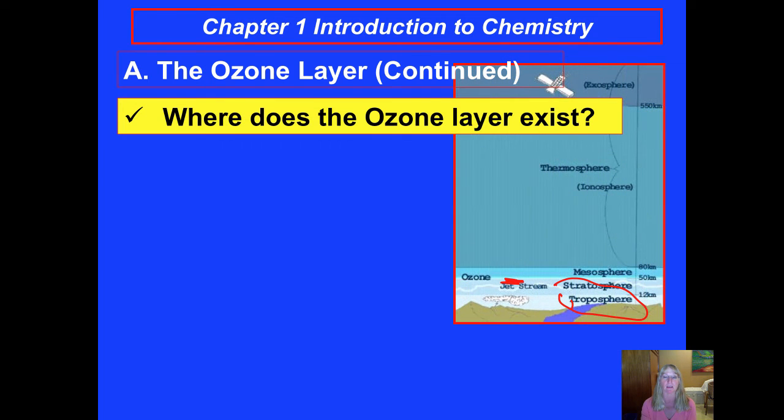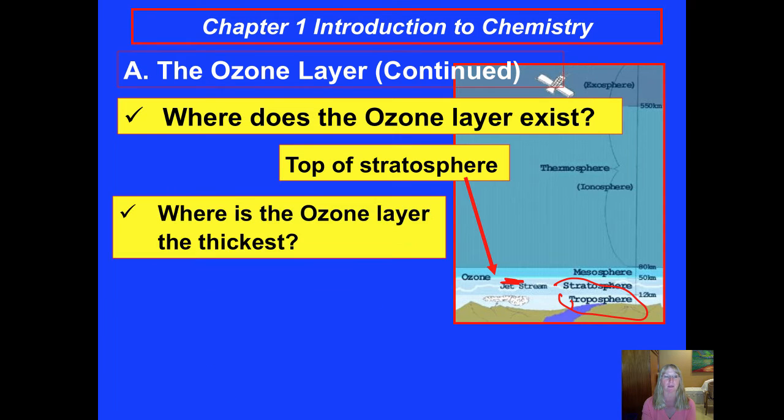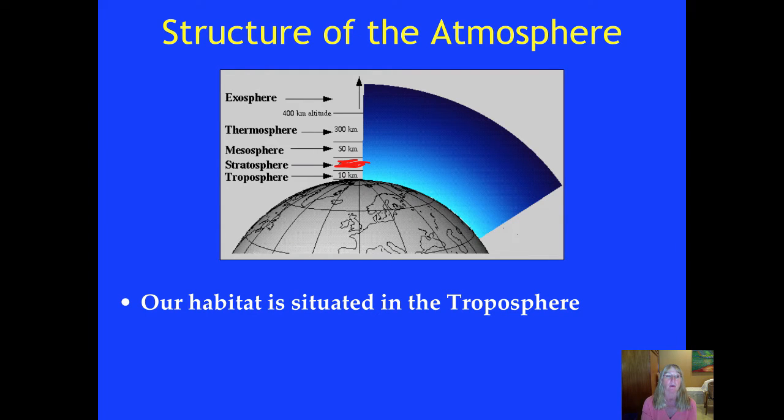Where does the ozone layer exist? If you look at this diagram that roughly matches what's on your PowerPoint notes, you can see that it's going to be at the top of the stratosphere. Looking at it from the side or looking at it from the top down, the ozone layer is going to be thickest at the equator. Where we're having the most problem is over the South Pole. There's a kind of a hole that develops there, and it also impacts, to some extent, Australians.